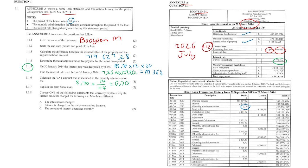Question 1.1.7: Define the term 'home loan.' A home loan is the amount that has been borrowed to buy a house.